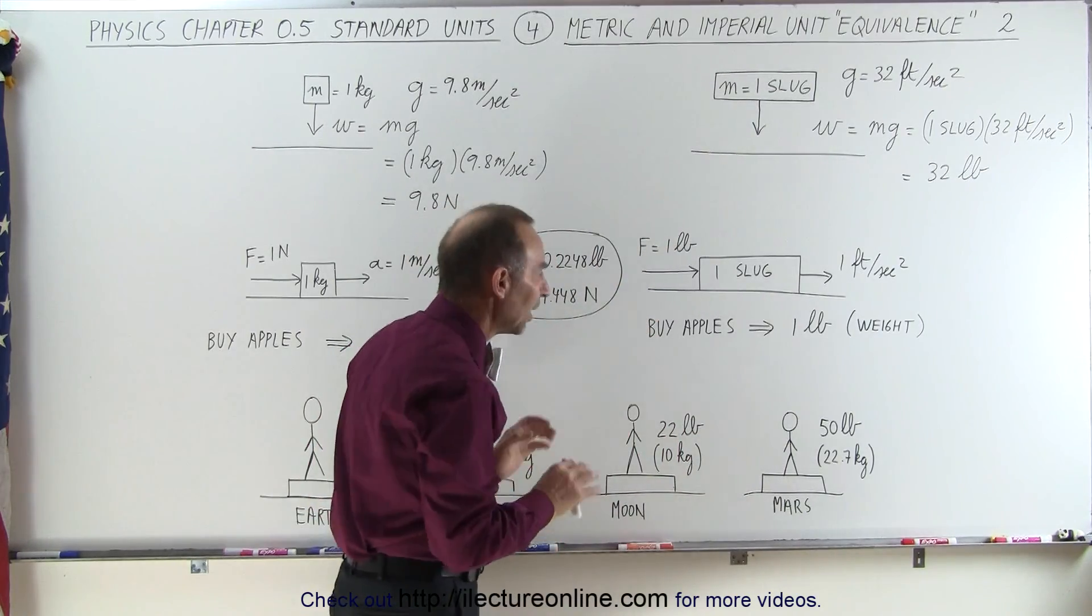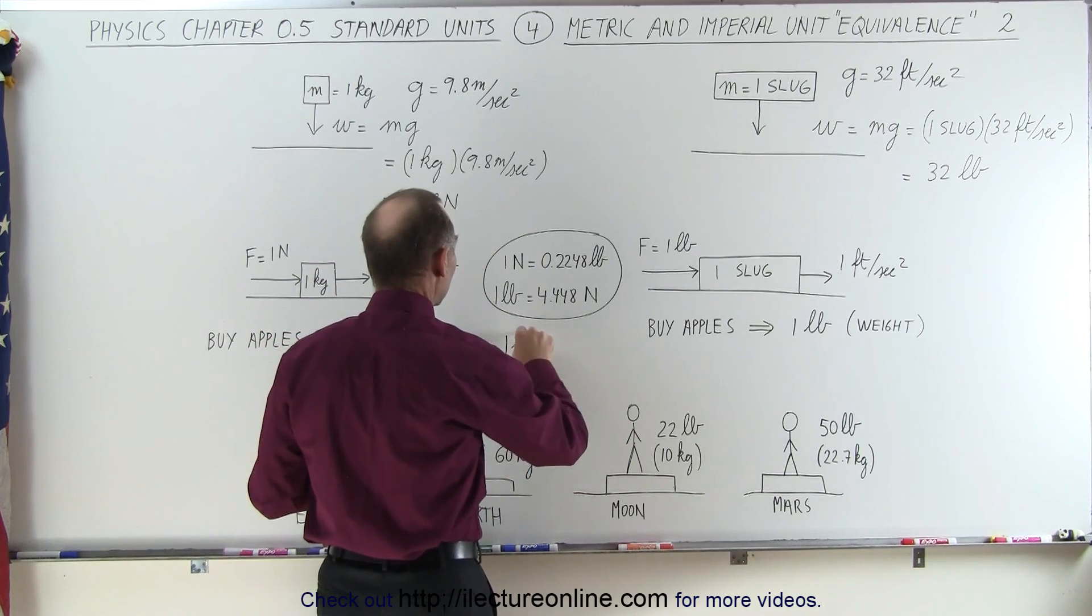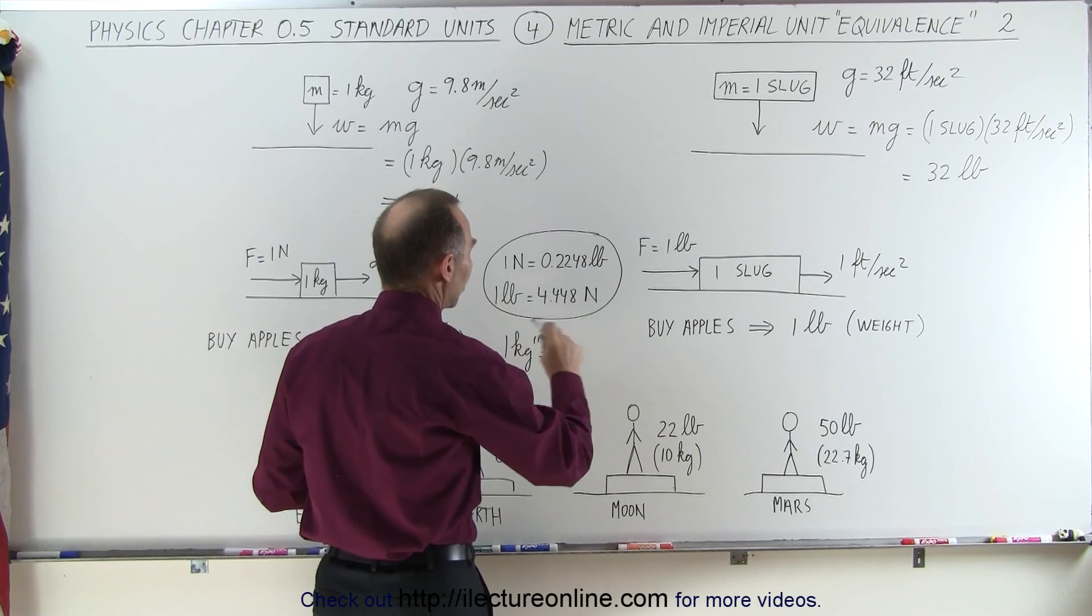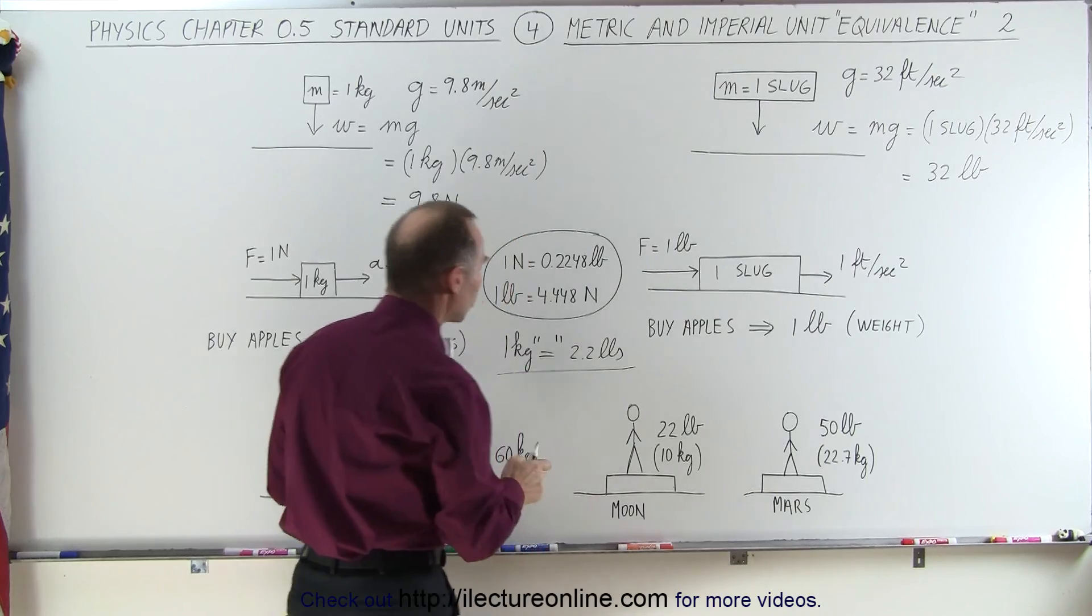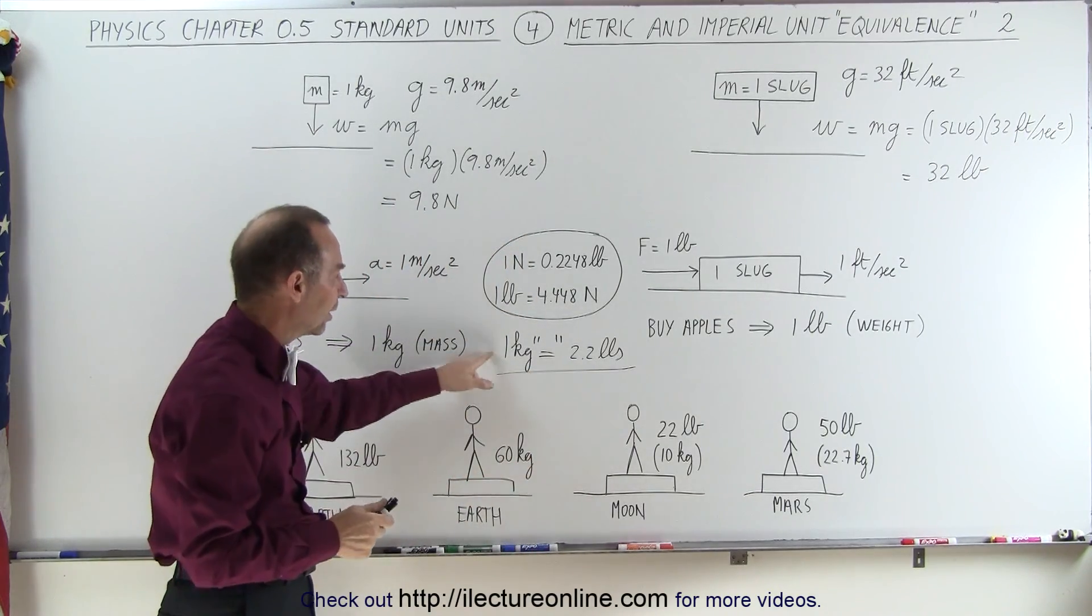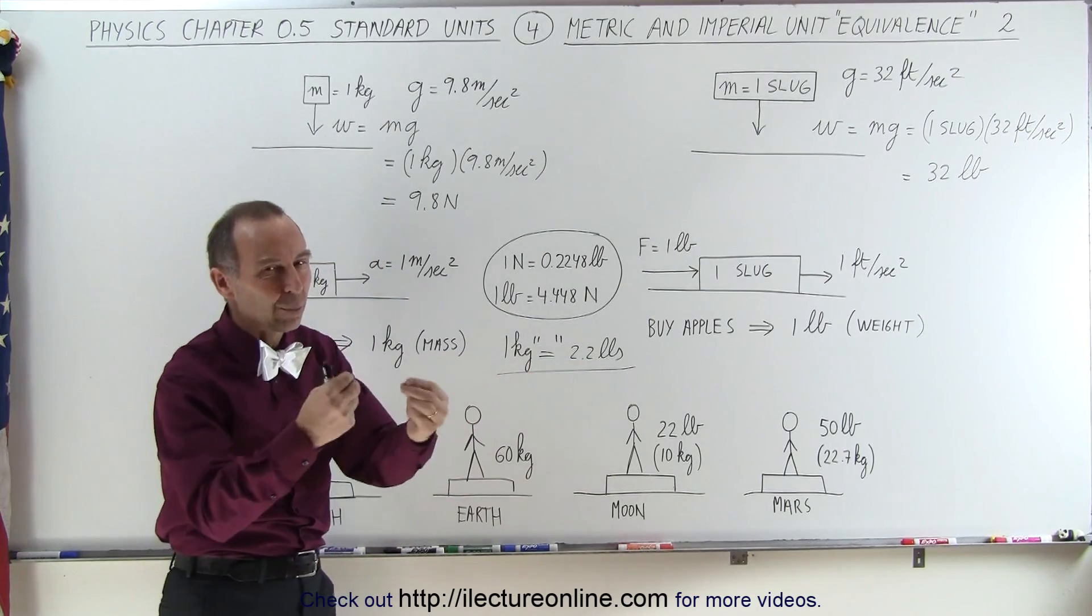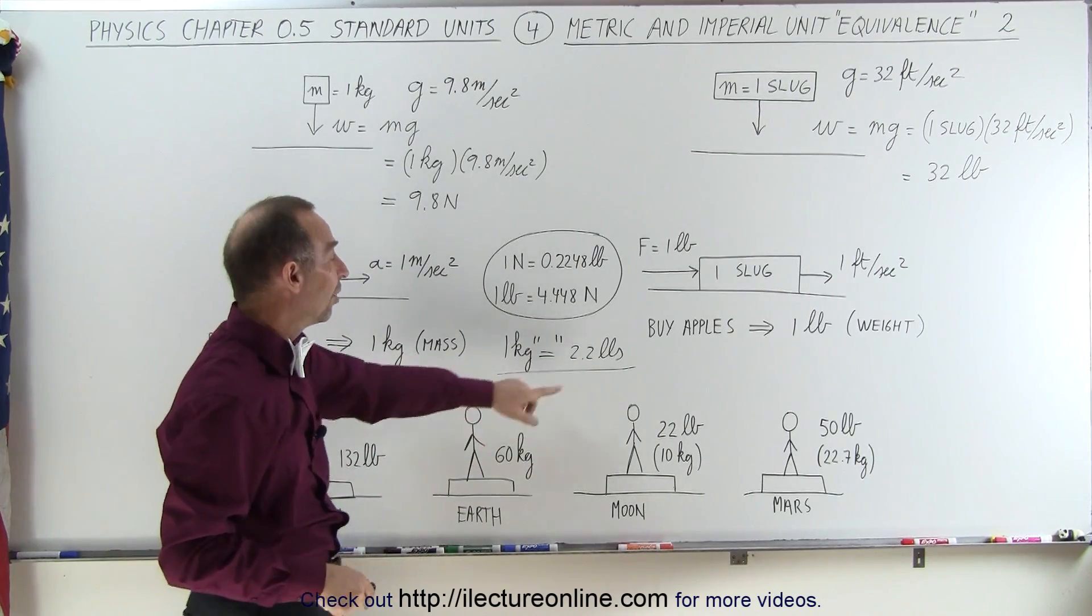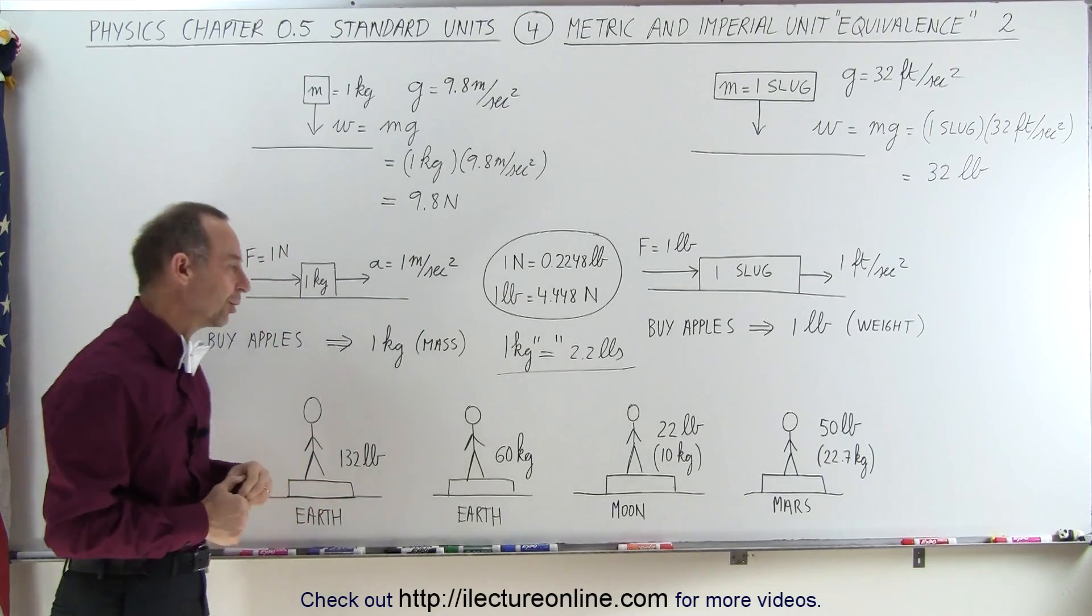The relationship, roughly speaking, is that 1 kilogram is equivalent, of course it's not equal to, it's equivalent to 2.2 pounds. That's the rough conversion between kilograms to pounds, but of course they're not equal because kilograms is a unit of mass, and pounds is a unit of weight. So you can't really equate them, but at least, if you want to buy 1 kilogram of apples in the United States, you'll look for 2.2 pounds of apples, and you'll end up with 1 kilogram of apples.